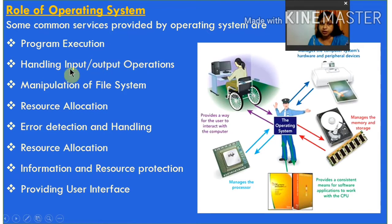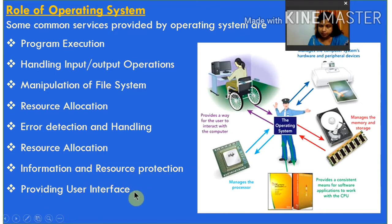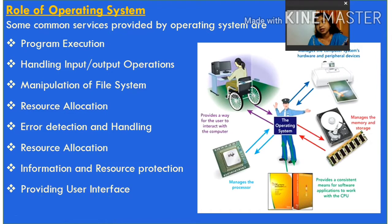The basic operations performed by the OS are: program execution, handling input and output operations, manipulation of the file system, resource allocation, error detection and handling, and information and resource protection, and providing a user interface. Many more functions are controlled by our operating system — from the booting of the computer to its functioning and giving us output, all is managed by the operating system.